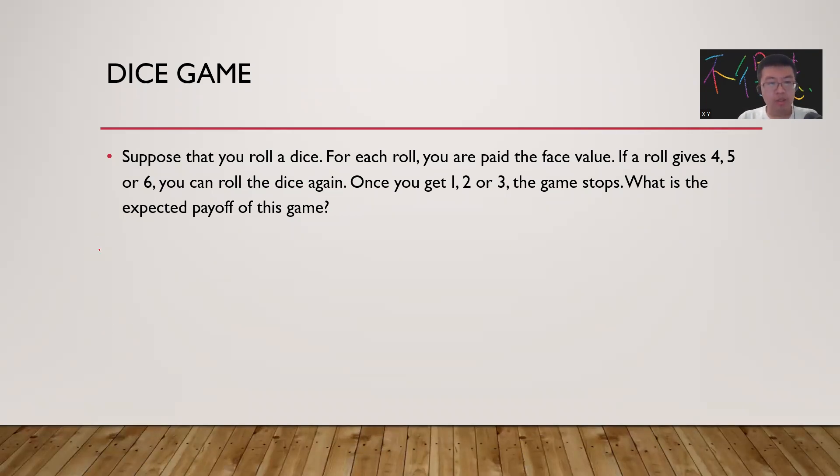Let's use expectation E to be the answer. For the first roll, you may get one, two, or three, and then the game will stop.